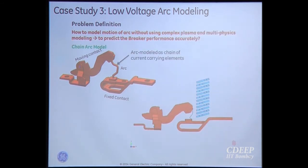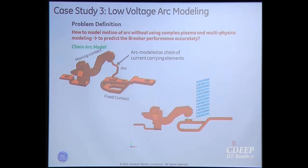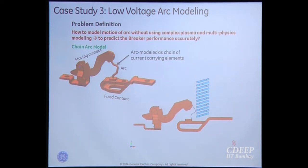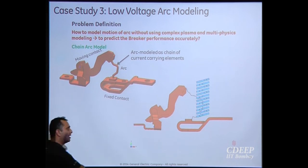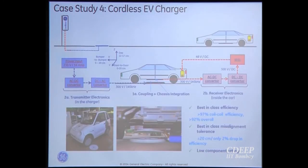Moving to circuit breakers: the arc comes in and gets split over the arc chutes. We model this and show some animation. Arc is typically modeled with CFD and plasma physics using multiple tools, but it takes a lot of time. If we are only interested in arc voltage and arc current and not temperature, we simply model the arc as a chain of small current-carrying elements that expand as the contact opens.